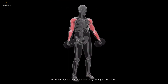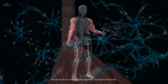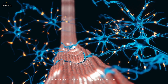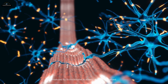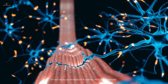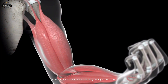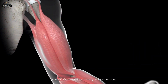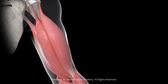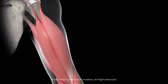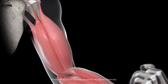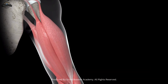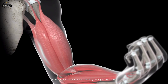After muscle contraction, calcium ions are actively pumped back into the sarcoplasmic reticulum, allowing the muscle to relax. This process is crucial for the regulation of muscle contraction and relaxation cycles.